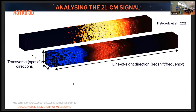With EOR experiments such as interferometers, we expect to measure this signal in 3D. Here is what's termed the light cone — the light cone of the brightness temperature signal. You have your transverse spatial scale on the sky, and then you measure different frequencies along the line of sight, so you can build up this 3D picture of the time evolution of neutral hydrogen from the dark ages down to EOR.